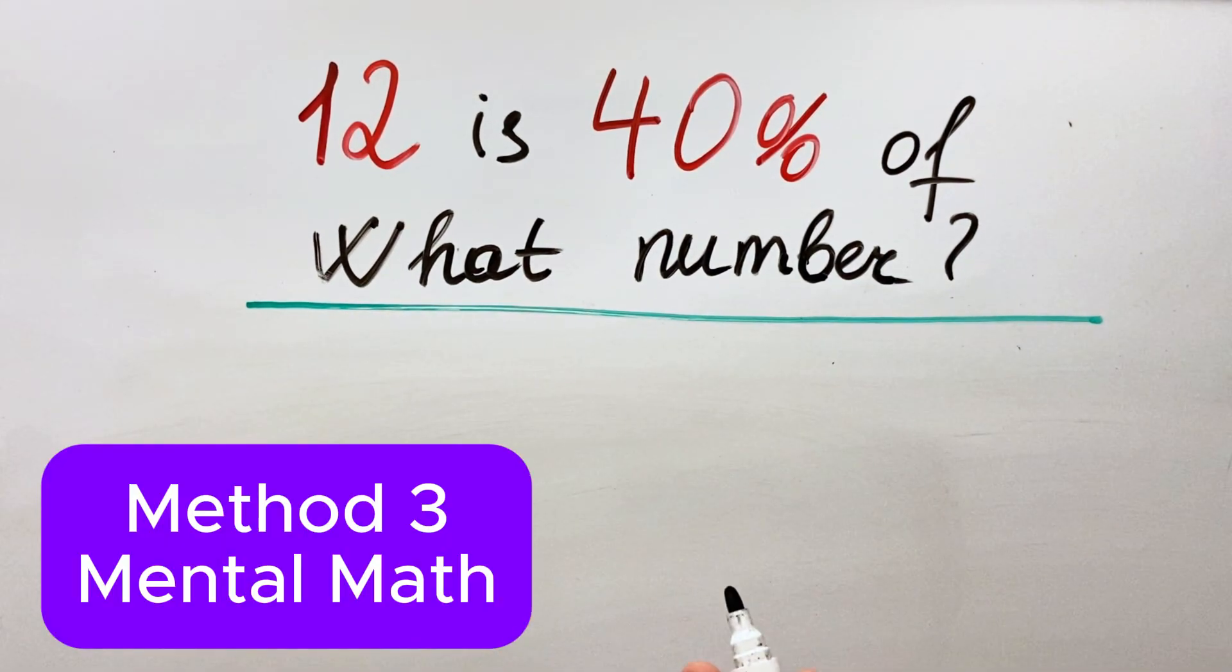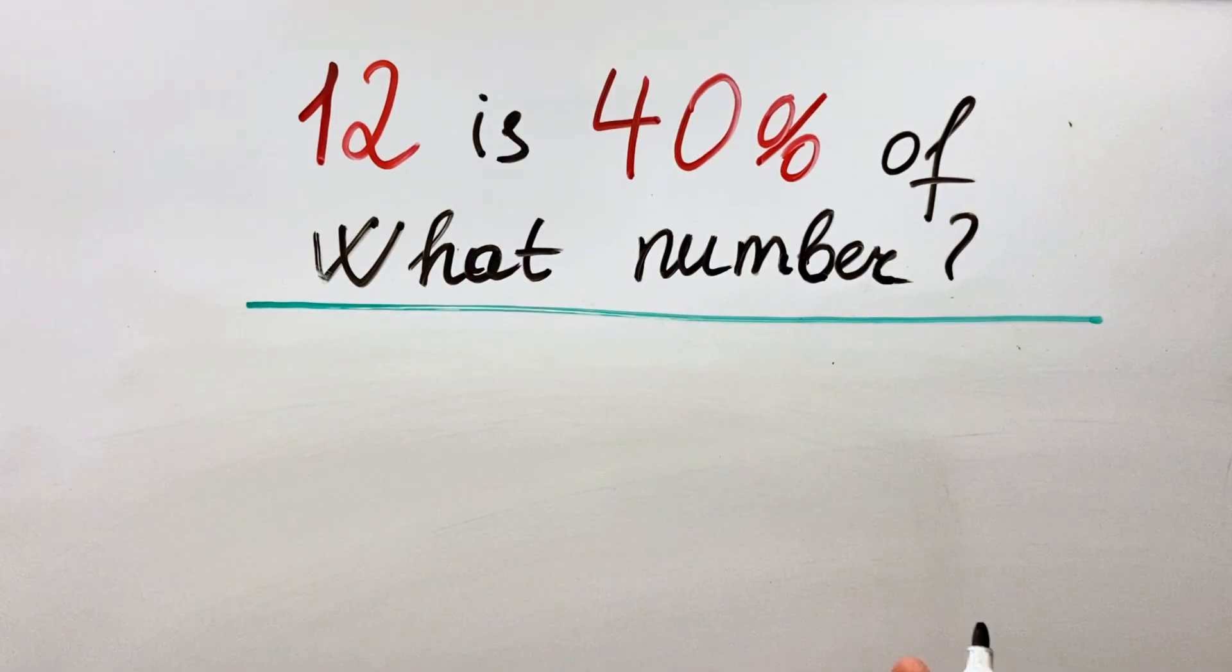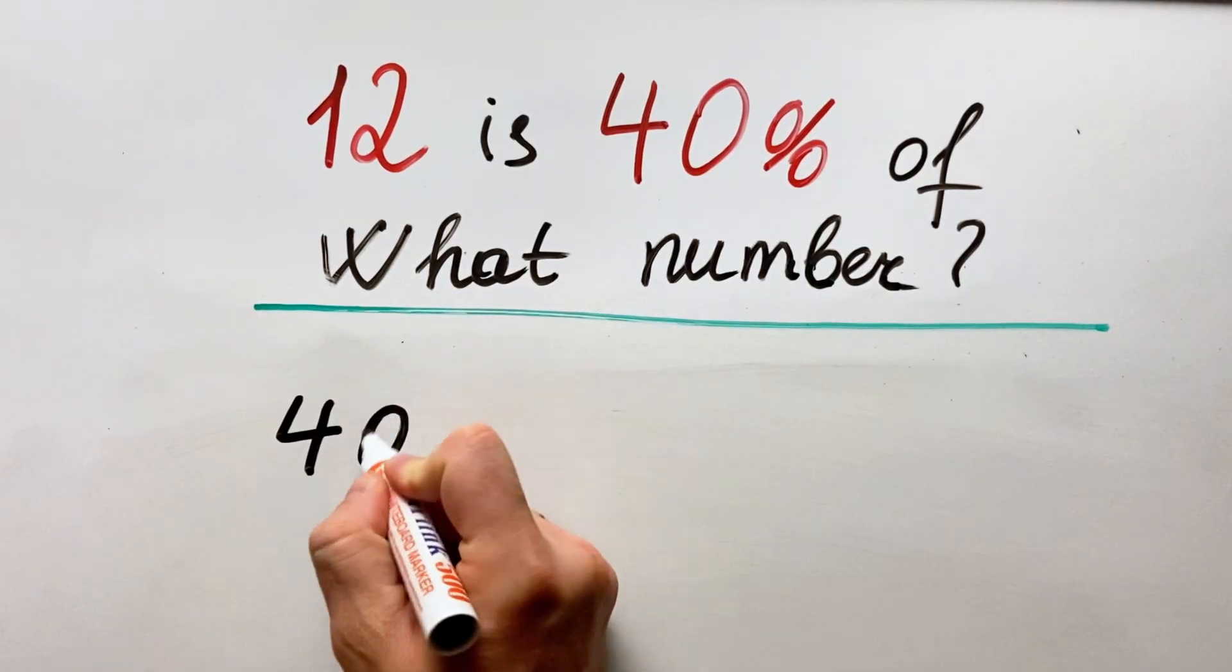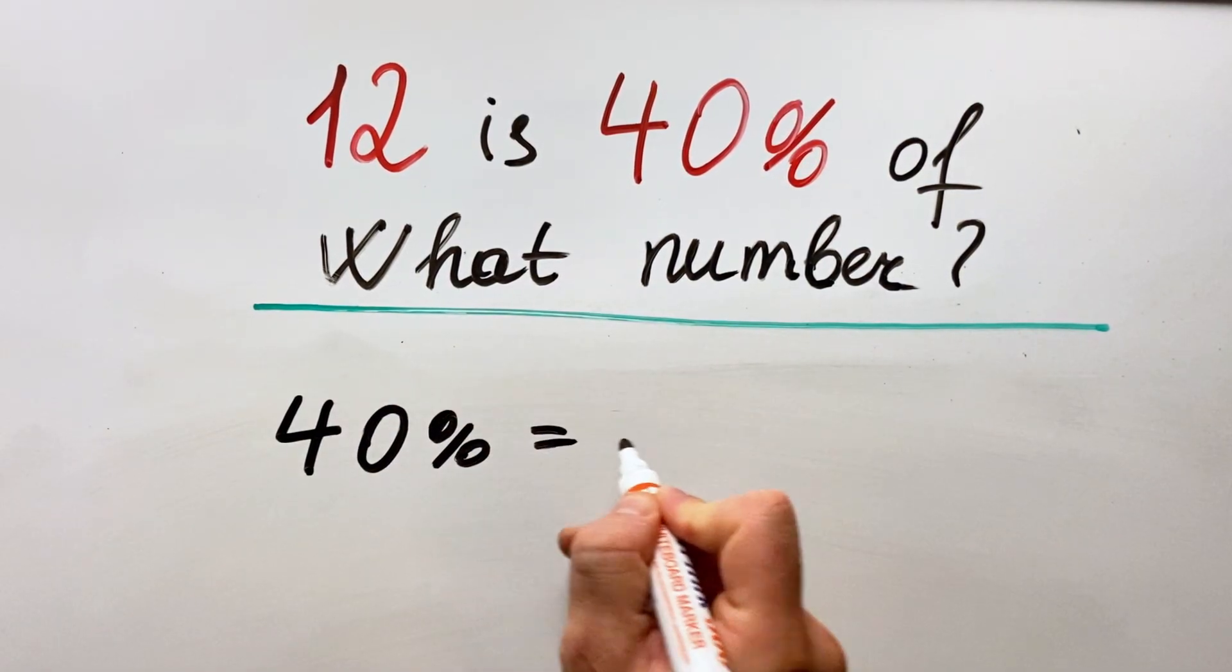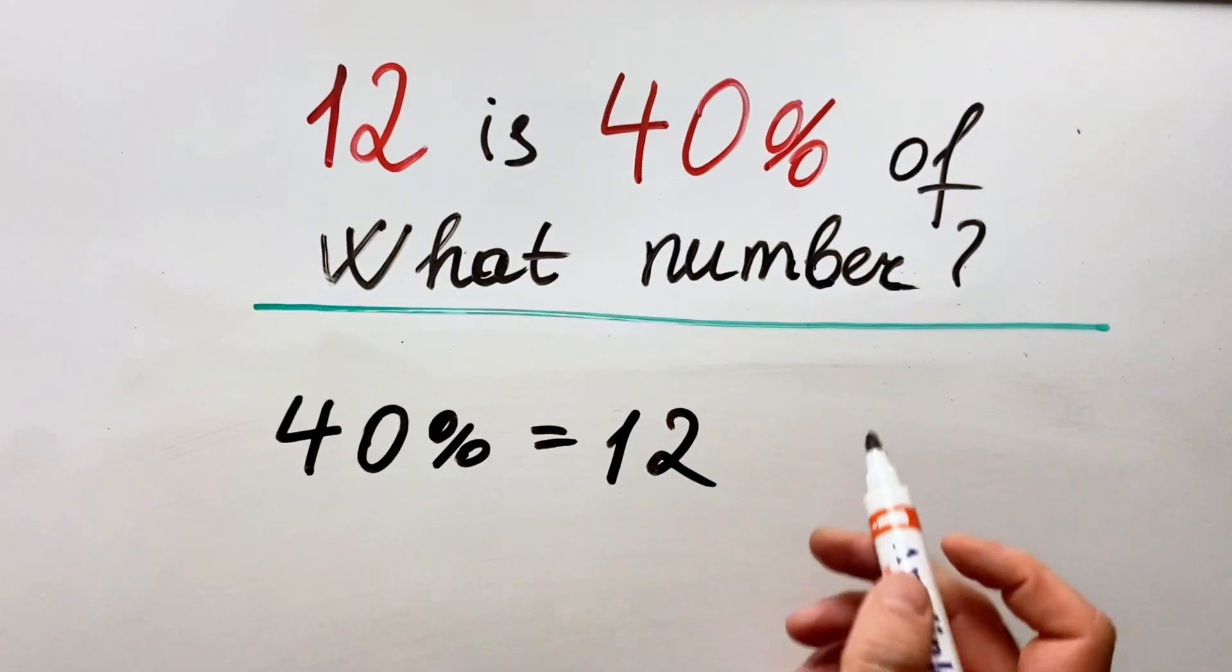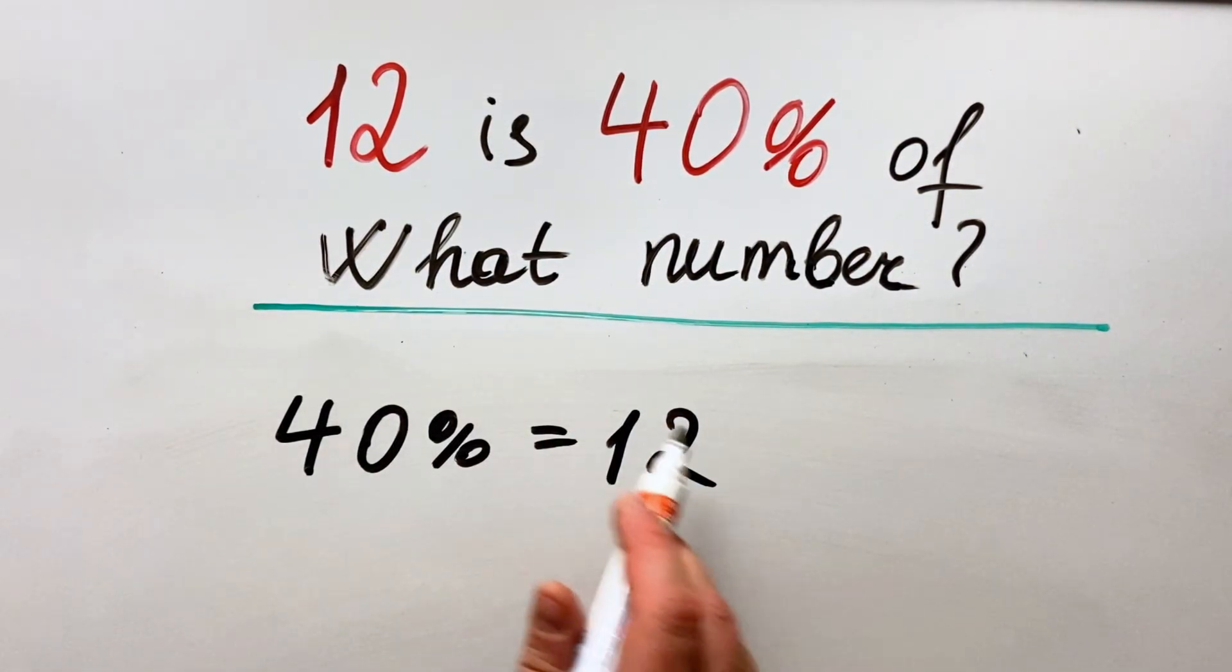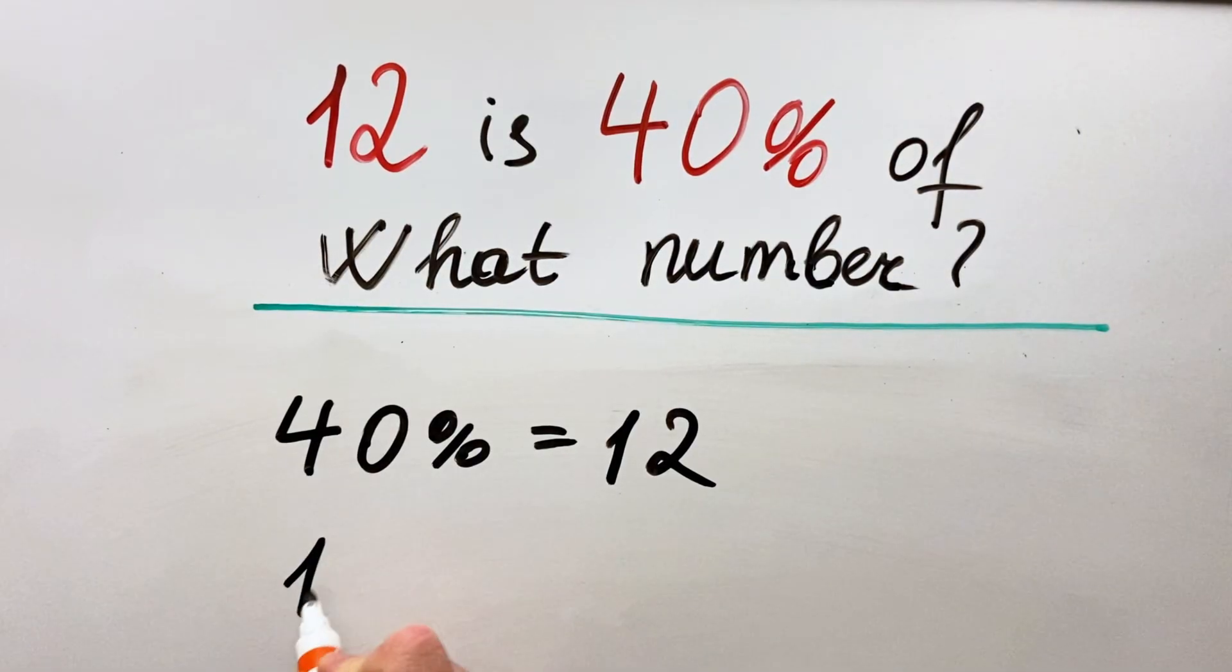And the last solution is using mental math. Here the idea is to calculate without using a calculator. So what we have here: we have 40 percent equals to 12. To find out 100 percent we need to figure out what is 10 percent.